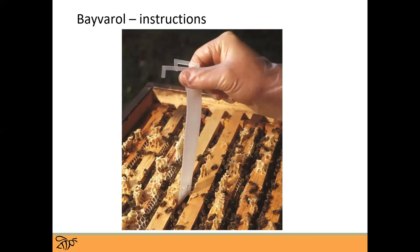The Baverol strips have little hooks that you can bend over to hook over a frame, and a slit at the bottom that you can hook another strip into when treating a double. This makes it easier to slide the lower strip down without cracking the boxes, though you might need to crack the boxes anyway to ensure proper placement and removal.